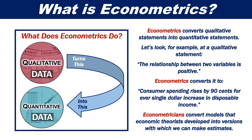Let's look, for example, at a qualitative statement: 'The relationship between two variables is positive.' Econometrics converts it to: 'Consumer spending rises by 90 cents for every single dollar increase in disposable income.'